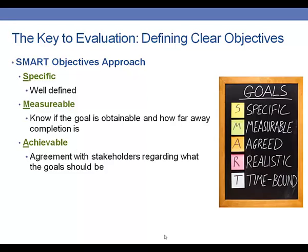Let's talk about goals being achievable. One way to make sure that our goals are going to be achievable is to ensure that, before we define our objectives and goals, they're in agreement with what our stakeholders also want from our program. This is a really important first step that needs to happen before you can define the objectives for your program.